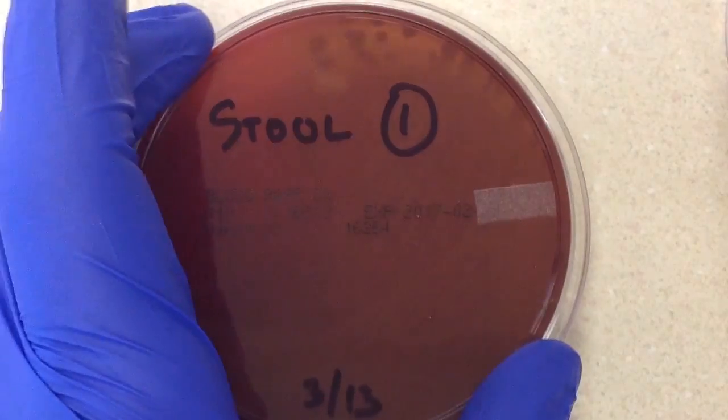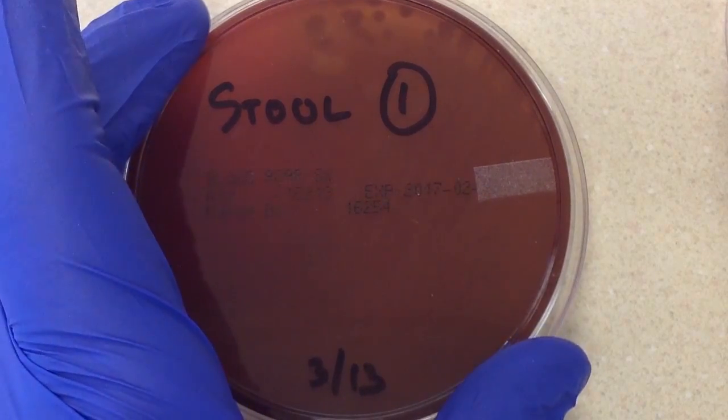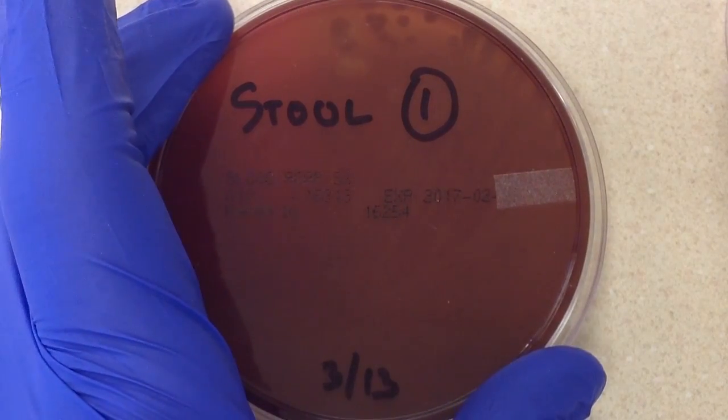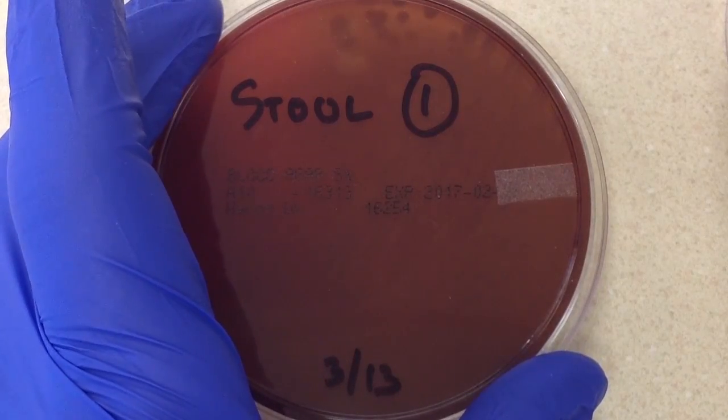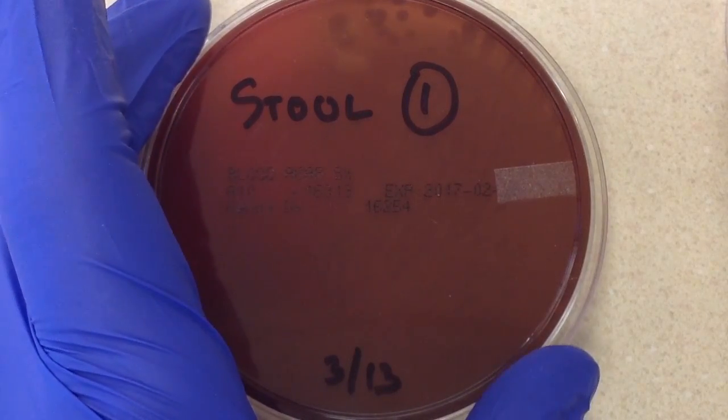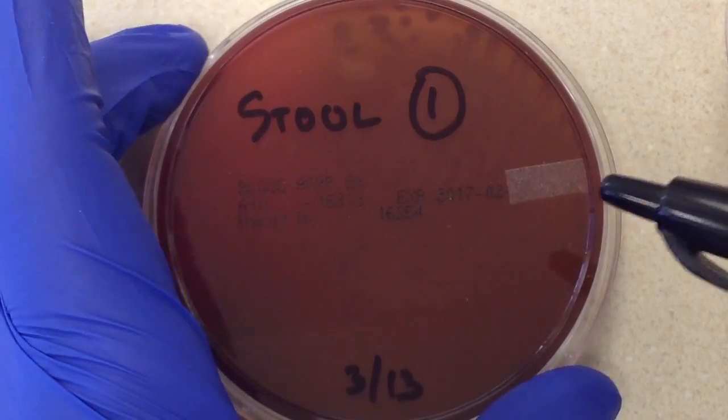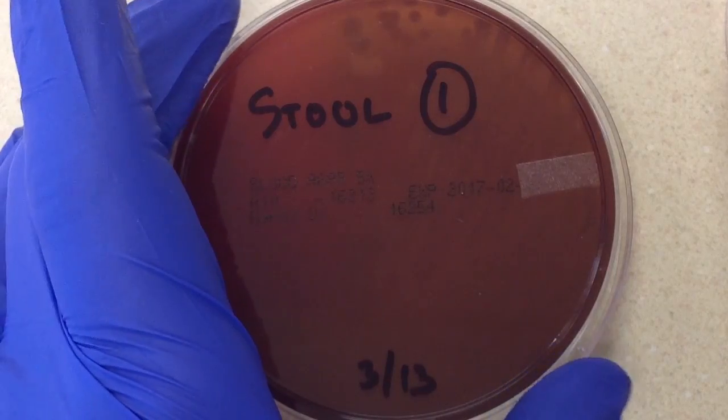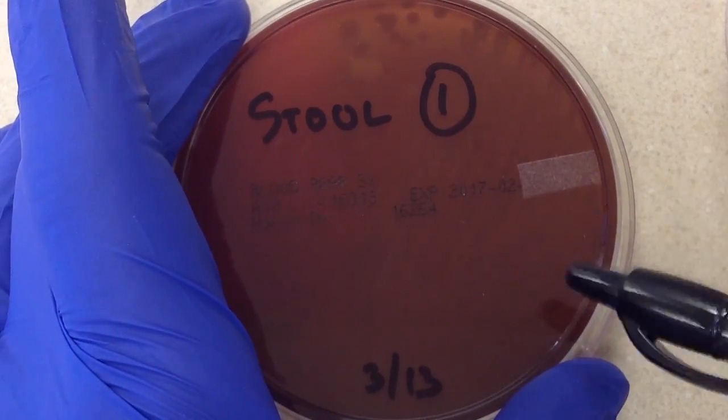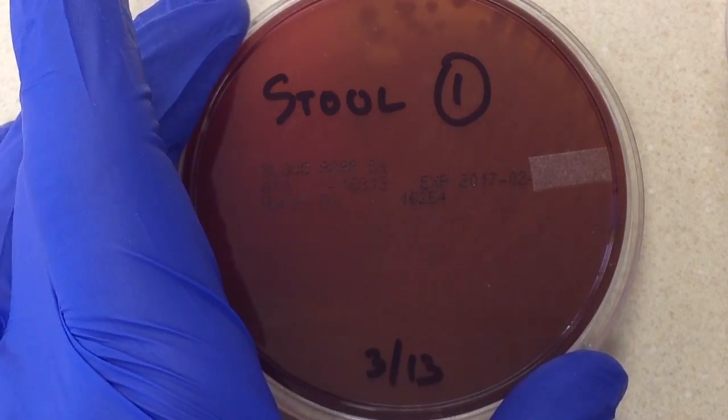Let's take a look at our sheep blood plate. The common pathogens for stool are Salmonella, Shigella, E. coli O157:H7, Campylobacter jejuni, and possibly even Staph aureus or Candida species, Candida albicans. Of all the ones I've listed, they're pretty much all going to grow on sheep blood. The only one would probably be Campylobacter.